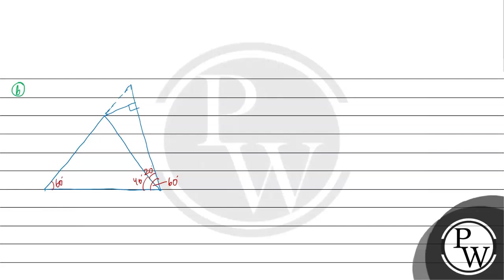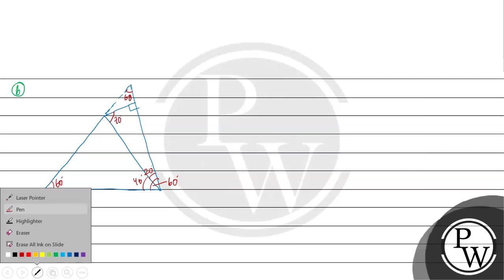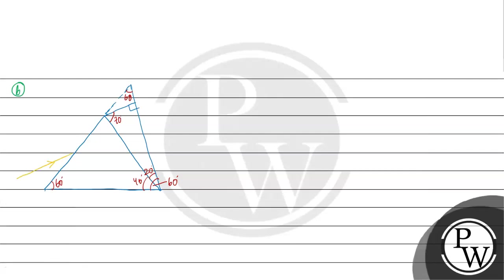Suppose a ray of light strikes at this point. We draw the normal. A ray of light is coming and we label this angle as i, this as R1, and this as R2. After marking the points, we label them A, P, C, D. Triangle ADP is an equilateral triangle.